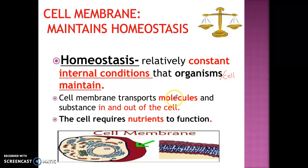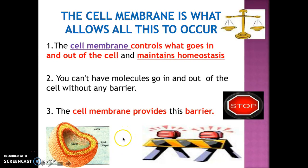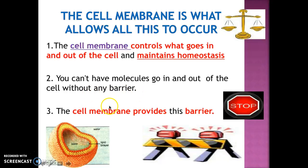Cell membranes transport molecules and substances in and out of the cell. The cell requires nutrients to function, and all of those nutrients are going to be passing through the cell membrane in different ways. The cell membrane controls what goes in and out of the cell and maintains homeostasis. The only way we can have homeostasis is if we have a cell membrane. Without a barrier, any molecules can go through — even those the cell probably doesn't need. The cell membrane provides that barrier.